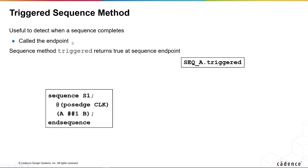Every sequence has a built-in method called triggered, and we can use this to define an endpoint of a sequence. This sequence method called triggered returns true at wherever the sequence ends, and that depends on what its clock is.